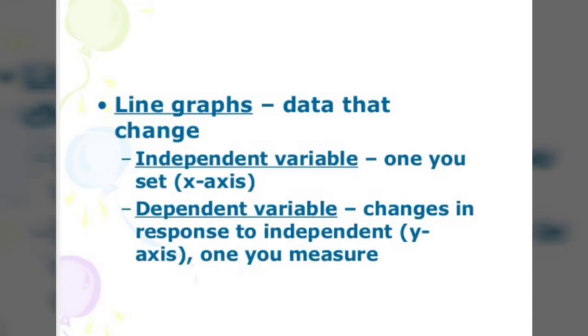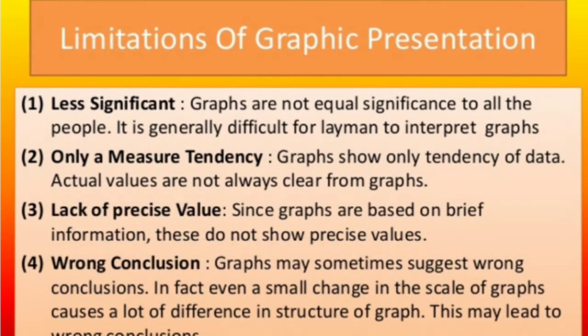Now a line graph includes independent variable that the one you set on x-axis and the dependent variable that you have to measure and keeps on changing on y-axis. So this is the definition of independent and dependent variable.